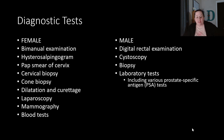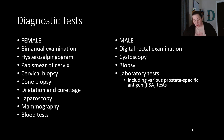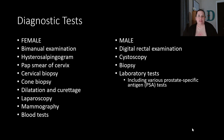A dilation and curettage, also known as a D&C, is performed when endometrial cancer is discovered. It involves surgical dilation of the cervix and scraping of the uterine endometrial lining. A D&C is also commonly performed following a spontaneous miscarriage or abortion, to remove dead tissue and clean out the endometrial lining. Laparoscopy may be done with a camera for a closer look. A mammogram examines breast tissue, and blood tests can also be performed.